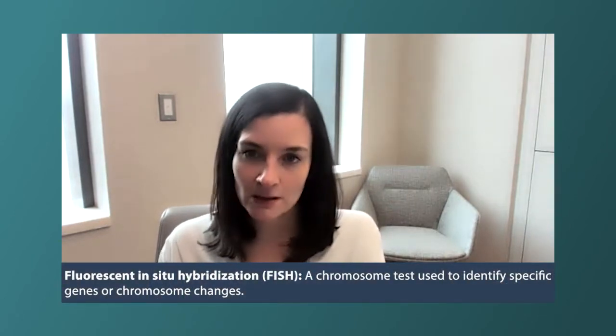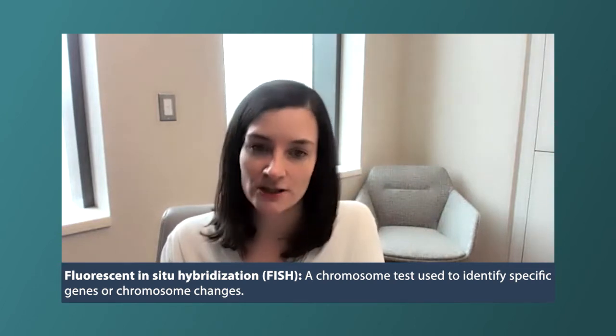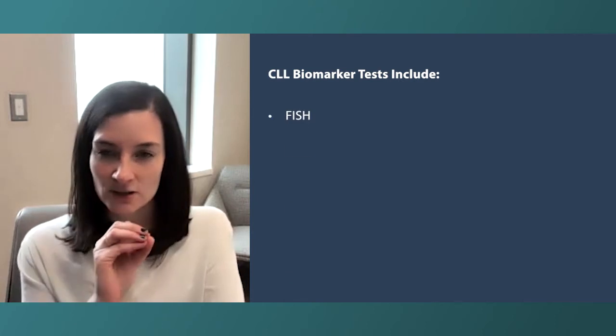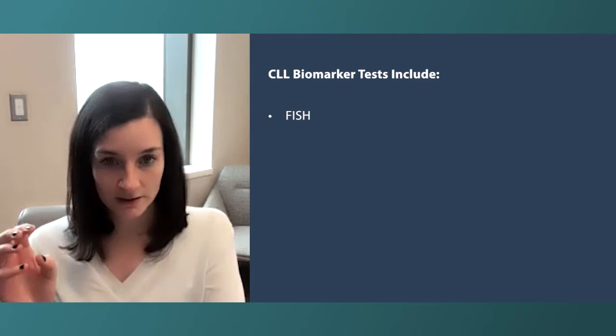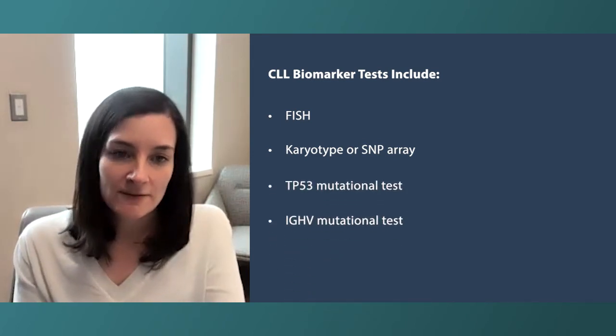What about FISH and TP53 mutation? At diagnosis, I often do this testing, though depending on your provider, you may do it at diagnosis or closer to the time of needing treatment. FISH is a test that looks for big changes in the chromosomes — for example, whether an entire arm of a chromosome is missing. There's also karyotyping or SNP array, which are more refined tests. FISH is a targeted look at a few chromosomes, whereas karyotype or SNP array looks at all of the chromosomes.